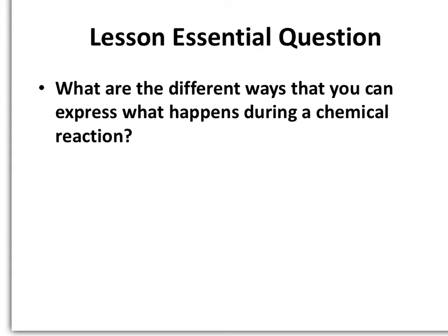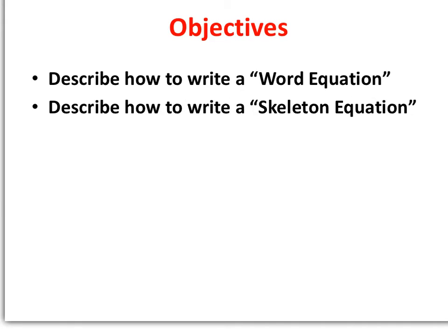The essential question for this unit is: what are the different ways that you can express what happens during a chemical reaction? There are two objectives of today's lesson. We're going to look at different kinds of equations, and we want to be able to describe how to write a word equation and also describe how to write a skeleton equation.